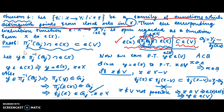Let's look at the theorem here. Points to closed sets and distinguishing functions. Points to points and distinguishing functions. We will also see the theorem here.